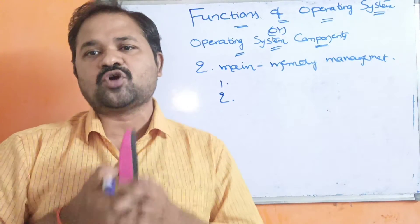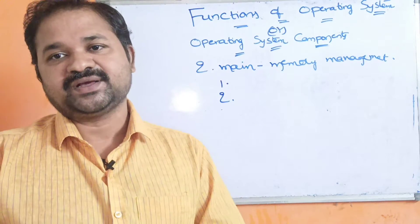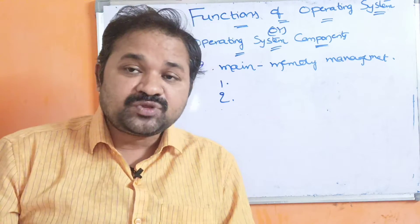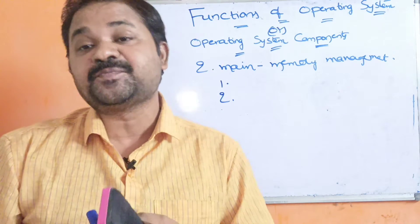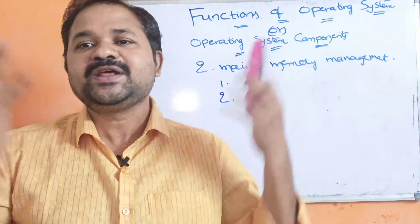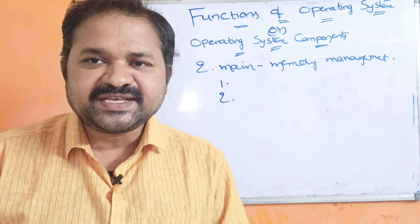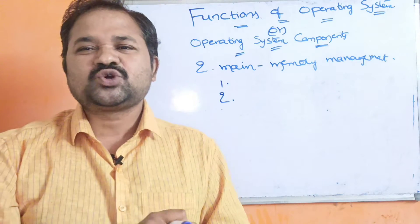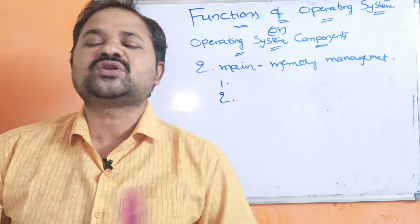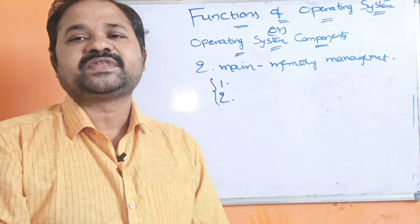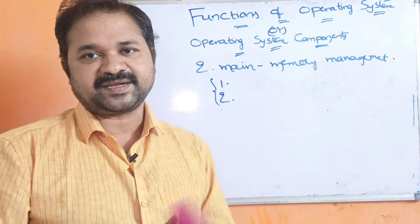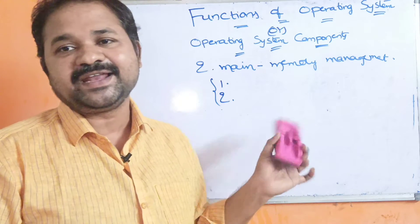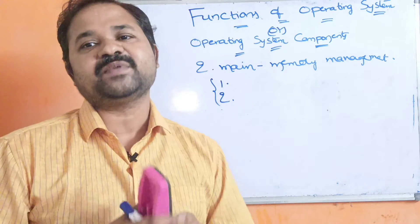Once all operations are over, the operating system deallocates the memory. It transfers the program from main memory back to secondary memory, because the size of main memory is very small whereas the size of the hard disk is extremely large. Once execution is over, the operating system transfers the process from main memory to secondary memory so that space can be used for other programs. These two — loading from disk to RAM and transferring back after execution — are the major activities in main memory management.